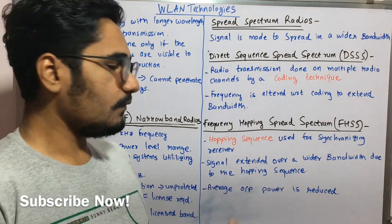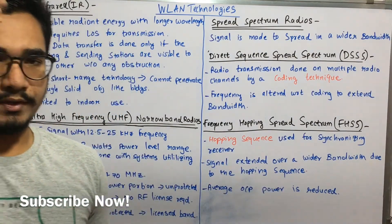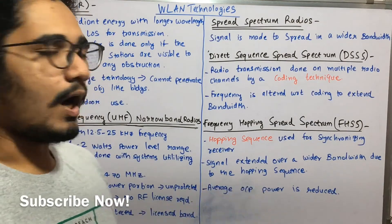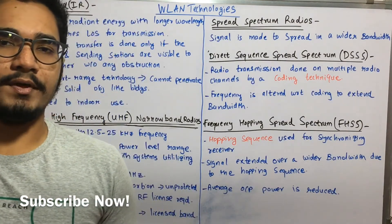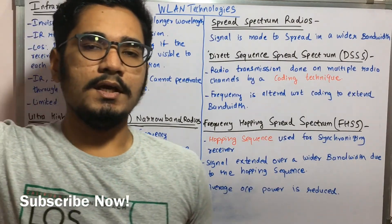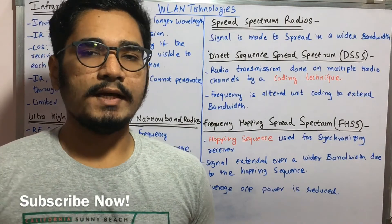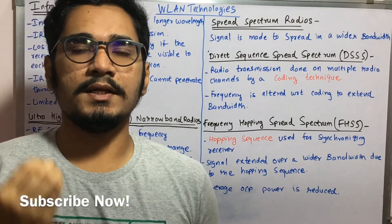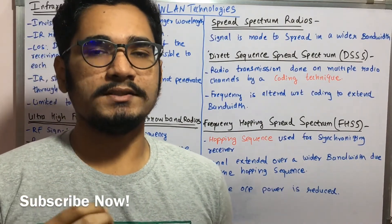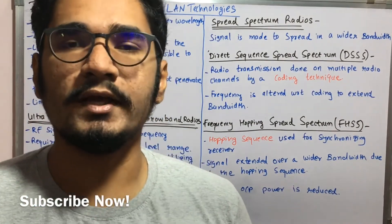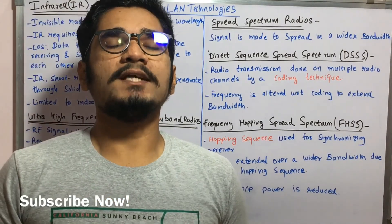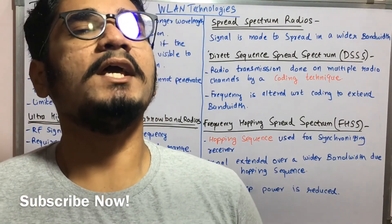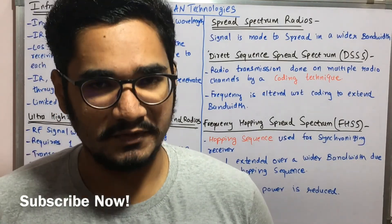The hopping sequence is the key factor in FHSS, whereas in DSSS the coding technique is the key factor. When you transmit the signal using FHSS, the average output power is much reduced compared to the incoming signal. That was all regarding the different technologies used in WLAN. Hope you guys enjoyed this video — please like, share, comment, and if you are new to the channel, please consider subscribing.